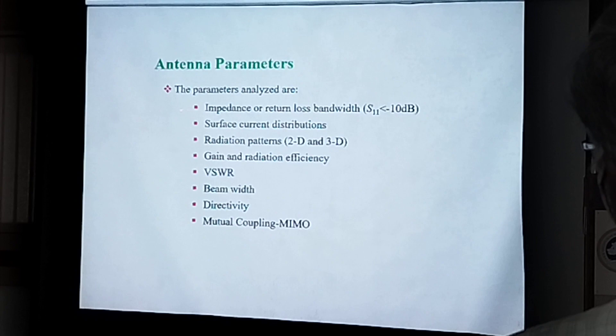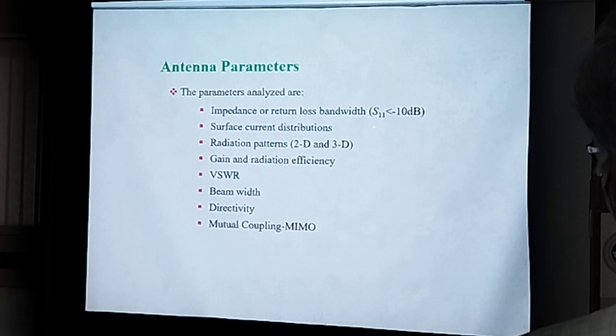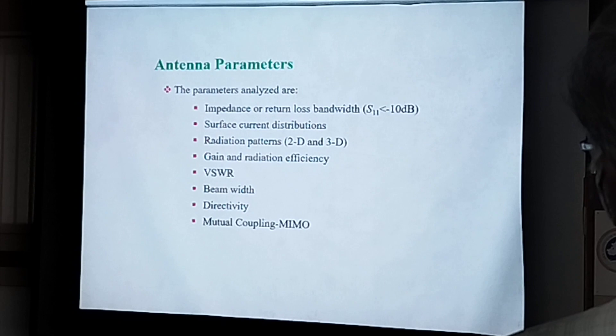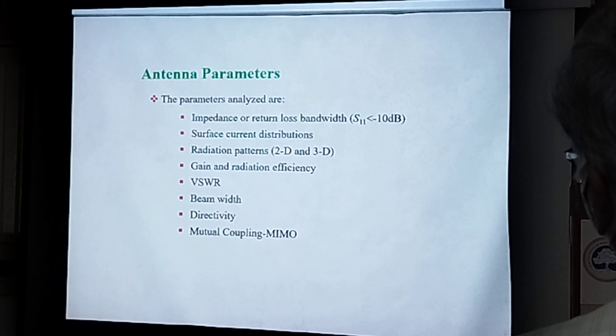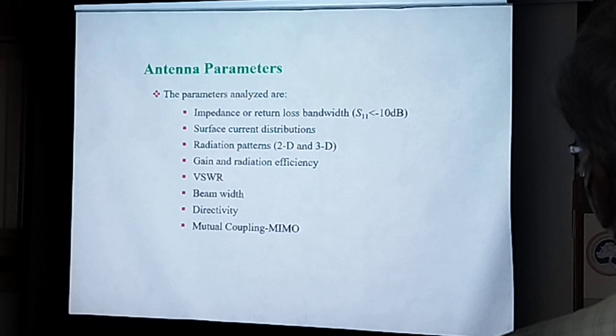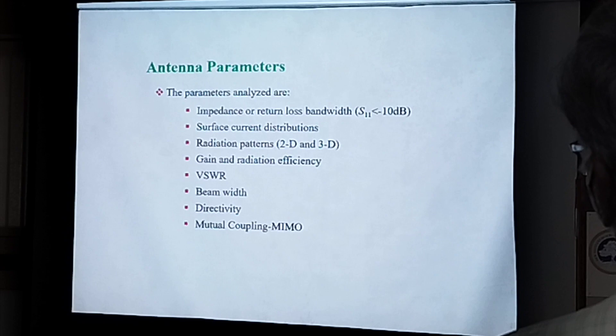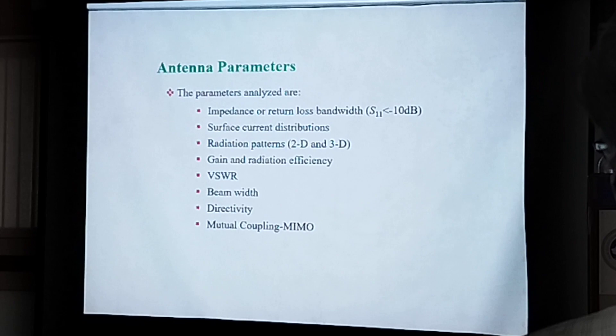Basically, the input impedance or the return loss is the first factor. For analyzing the antenna, the basic parameter is called return loss, or VSWR — Voltage Standing Wave Ratio. Once that VSWR is qualified, then you have to go for radiation pattern measurement. After radiation pattern measurement, you have to see the gain values and radiation efficiency parameters. And if it is in the case of an array, then you have to see the mutual coupling between elements, like in a massive MIMO type.